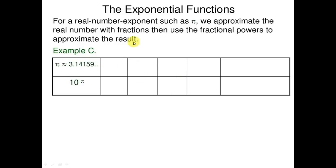For real number exponents such as pi, we approximate the real numbers with fractions, then use fractional powers to approximate the result. Example: pi equals 3.14159...